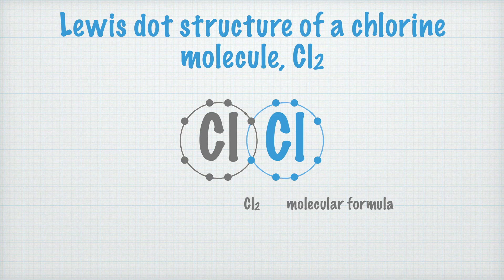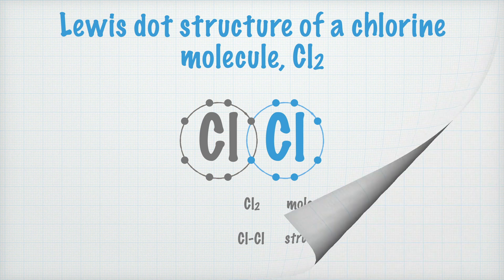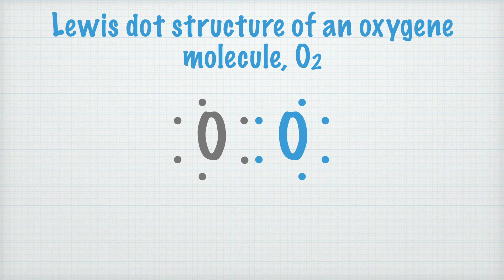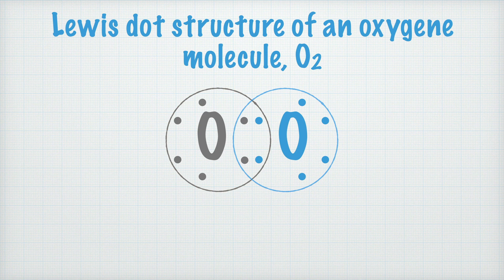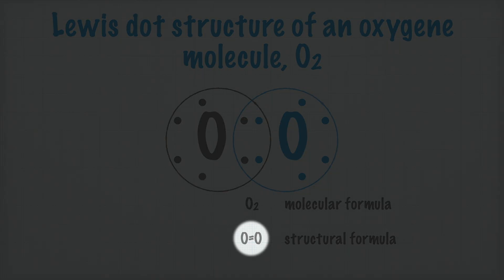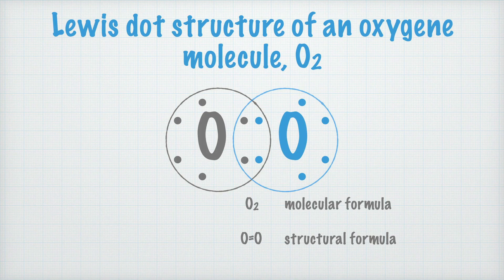We write its molecular formula Cl₂ and its structural formula Cl–Cl. Now let's find the Lewis dot structure for oxygen, O₂. An oxygen atom has six valence electrons. For an oxygen atom to get noble gas structure, it has to borrow two electrons from another atom — and here's another oxygen atom with two electrons to lend. By sharing two pairs of electrons, both the gray and blue oxygen atoms get noble gas structure. The molecular formula is O₂, and in the structural formula there are two dashes to show that the atoms share two pairs of electrons. This is called a double bond.